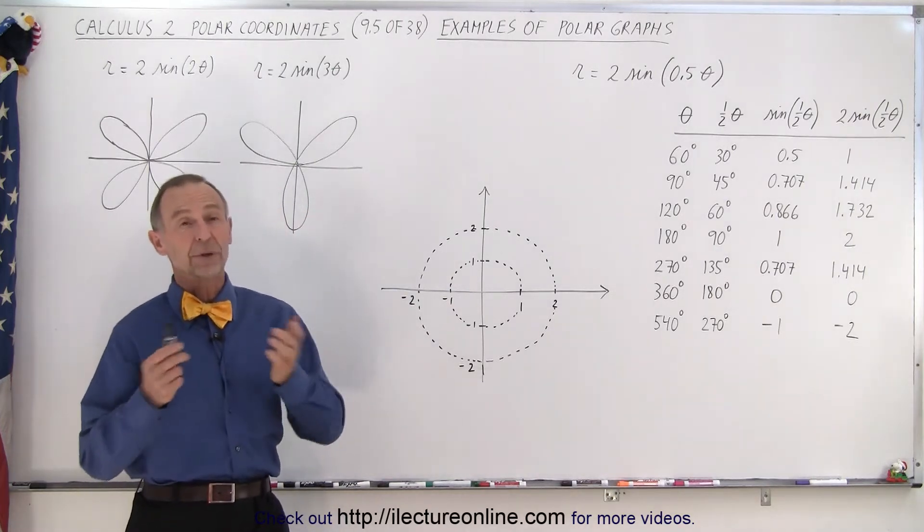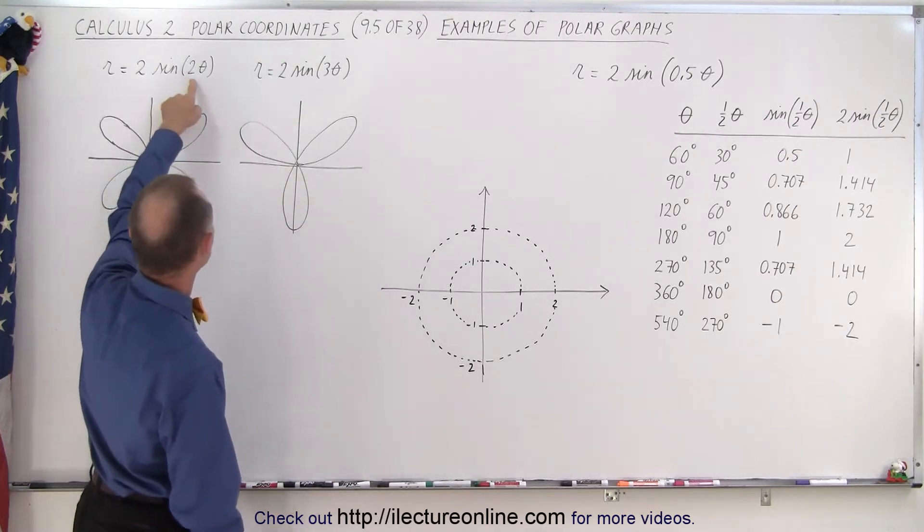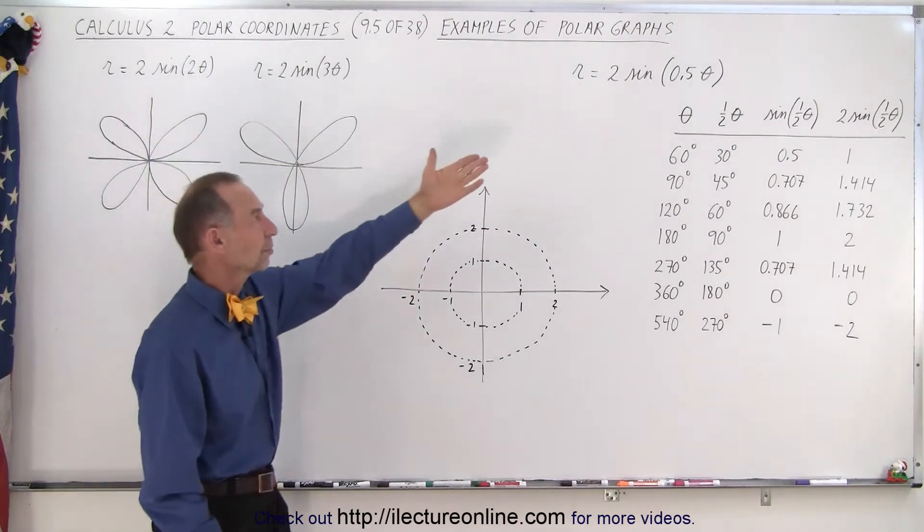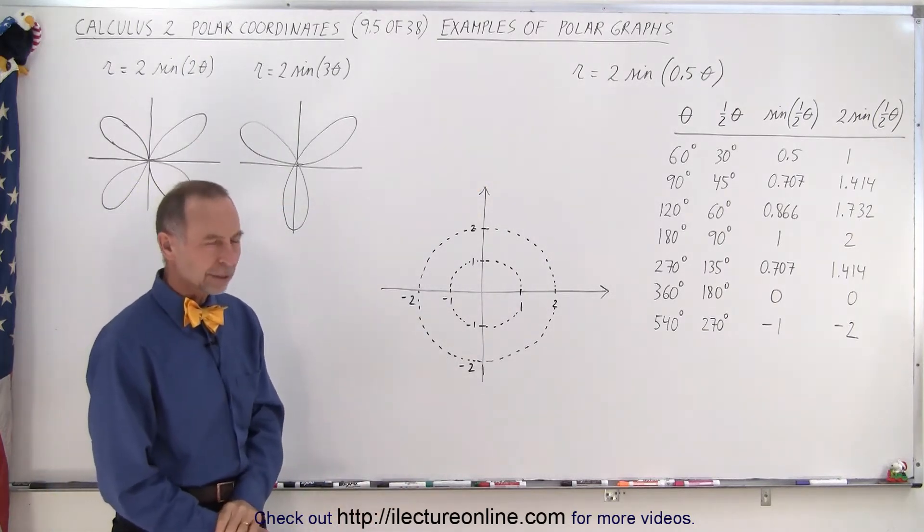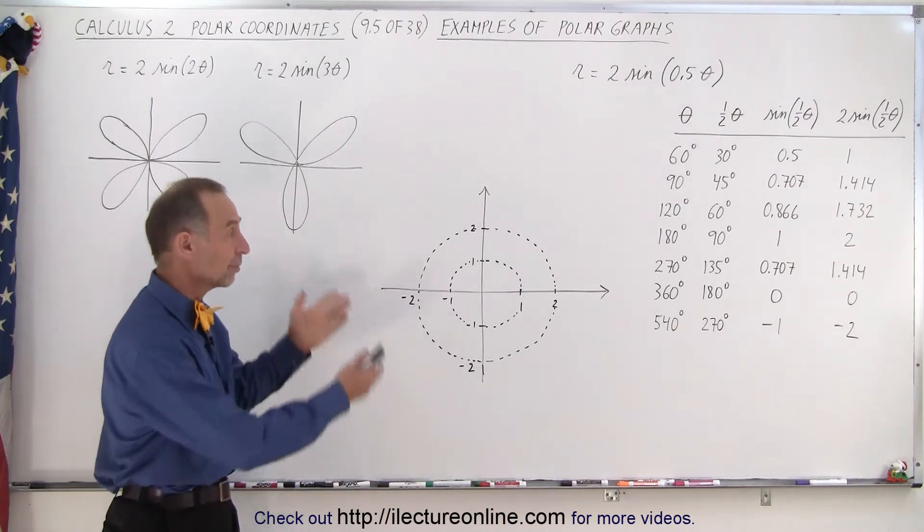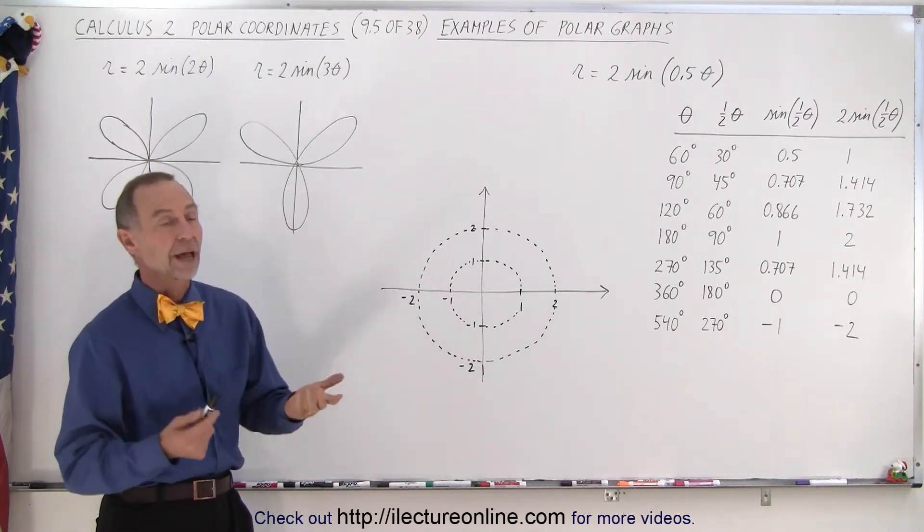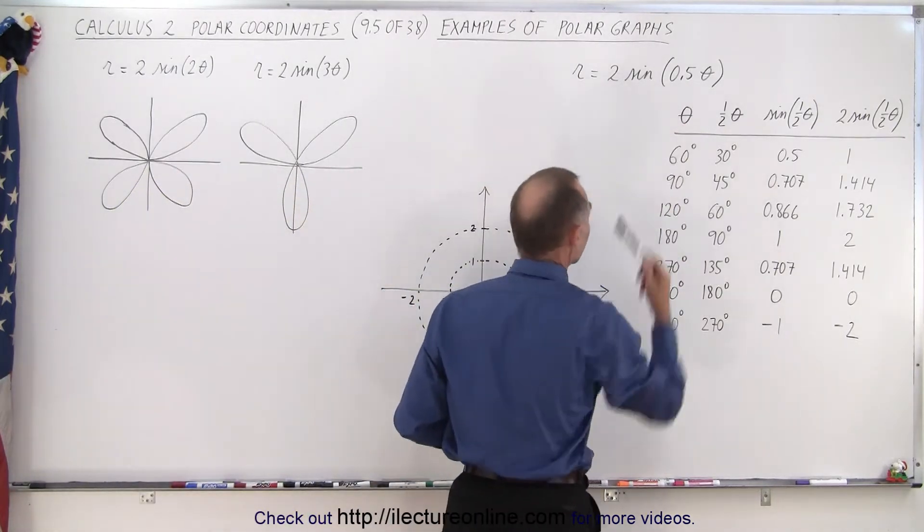But somebody, one of the viewers said, well you always have an integer number in front of the angle. What if you have a non-integer number, something like that? How do you graph it then? I thought that was a good idea because we didn't have any examples like that, so let's make a quick video showing you an example of what you would do if it was not an integer number in front of the angle.